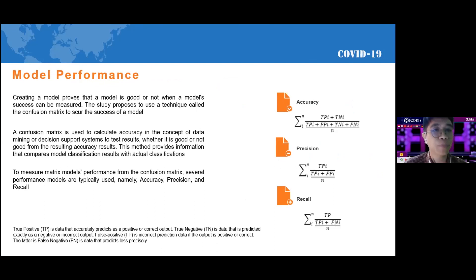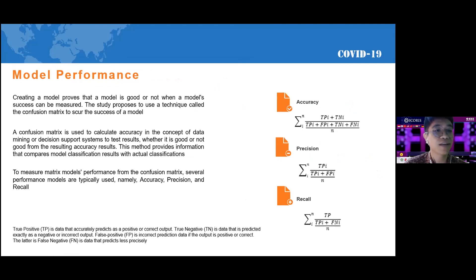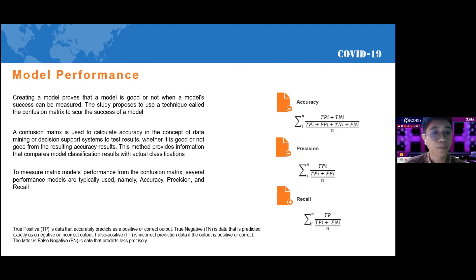For model performance, we chose the confusion matrix. The confusion matrix is used to calculate accuracy in the concept of data mining or decision support systems to test whether results are good or not. This method provides information that compares the classification model to measure matrix model performance. Several performance metrics typically used are accuracy, precision, and recall.